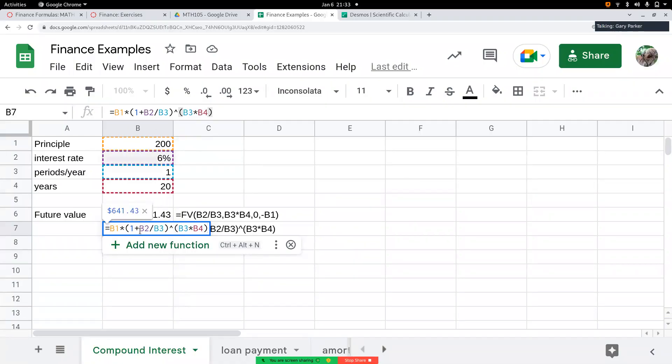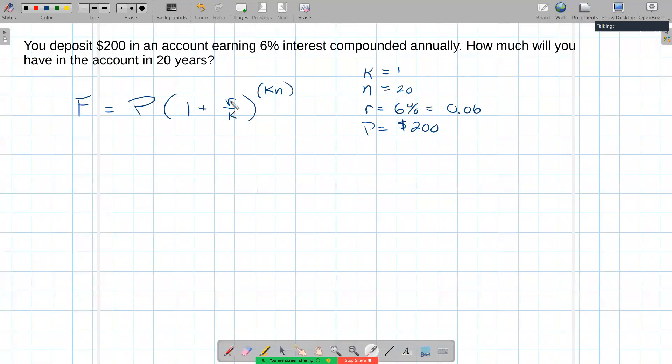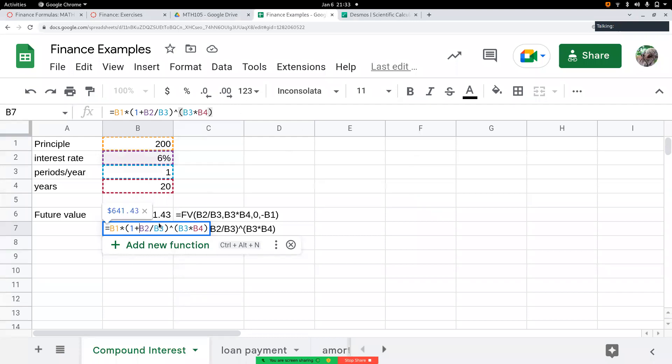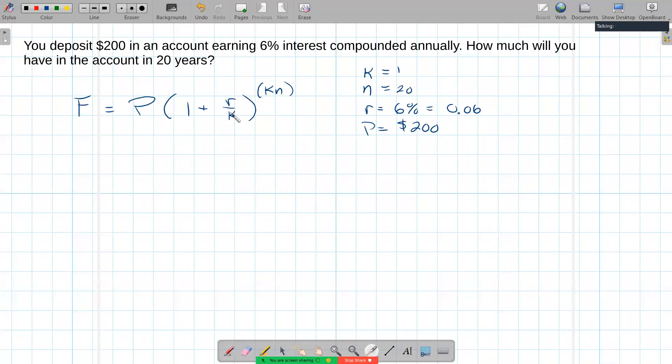B2 is my interest rate, the 6%, my R. So B3 contains my compounding period, my K. Now notice K appears both in the denominator, because we have to adjust the interest rate, and we want to repeat that compounded interest. That's why it ends up in the exponent.